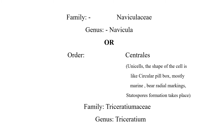Order Centrales: centric diatoms. Unicells, the shape of the cell is like a circular pillbox. Mostly marine, bear radial markings. Staurosporae formation does take place. Family: Triceratomaceae, genus is Triceratium.